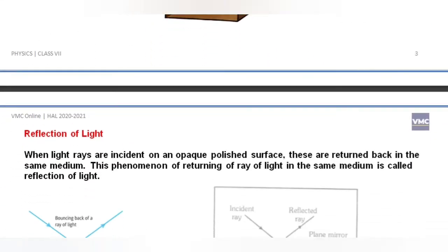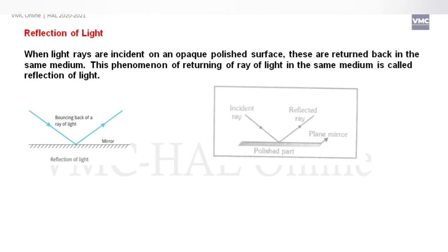Next is Reflection of Light. When light rays are incident on an opaque polished surface, they are returned back in the same medium — voh usi medium mein bounce back ho jaate hain. This phenomenon of the returning of light in the same medium is called reflection of light. For example, a mirror is a polished surface on which incident light falls and reflects.